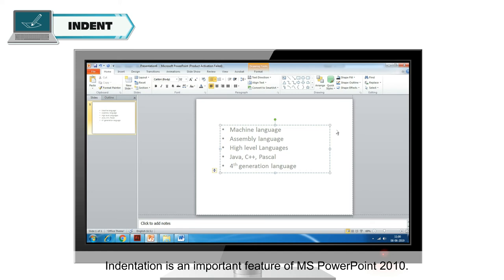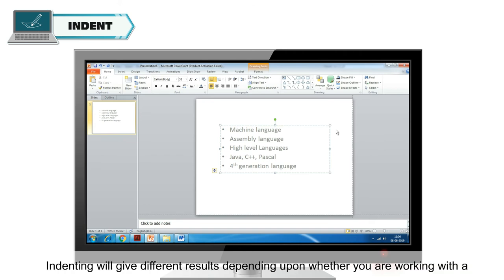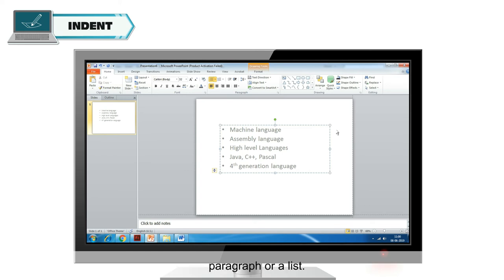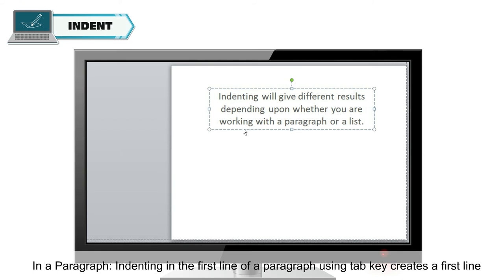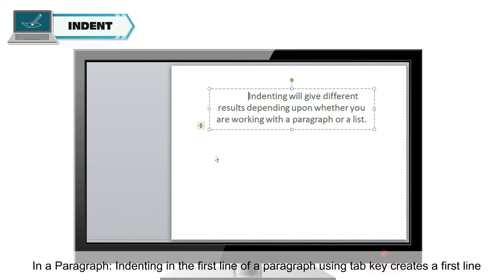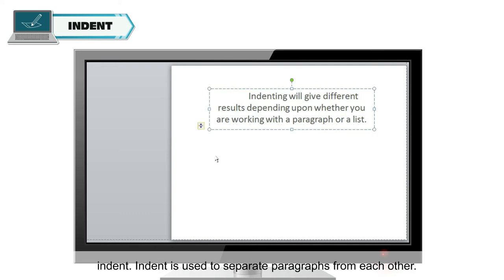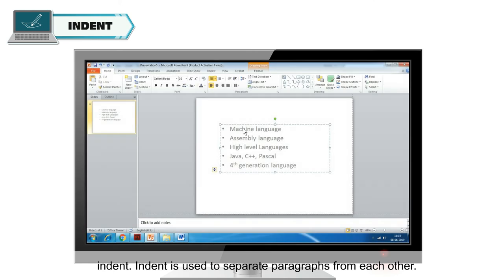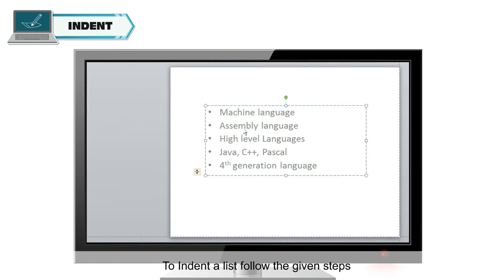Indent. Indentation is an important feature of MS PowerPoint 2010. Indenting will give different results depending on whether you are working with a paragraph or a list. In a list, indentation can be used to create multi-level lists. In a paragraph, indenting the first line using the Tab key creates a first-line indent. Indent is used to separate paragraphs from each other. To indent a list, follow the given steps.